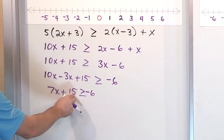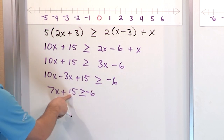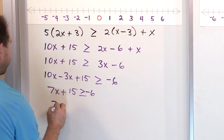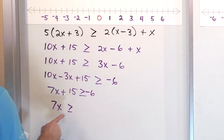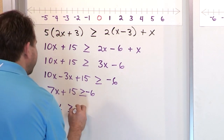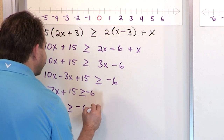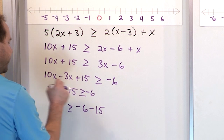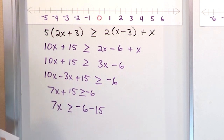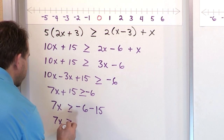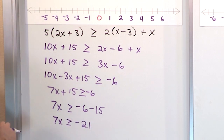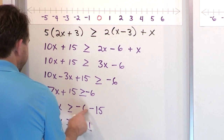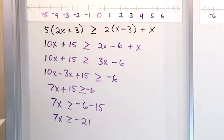To get rid of the 15, we subtract 15 from both sides. On the left, we'll just have 7x by itself. On the right, we write it as negative 6 minus 15 so we don't get confused. What is negative 6 minus 15? It's going to be 7x greater than or equal to negative 21. You add those and the sign is negative because the negatives were there to begin with.